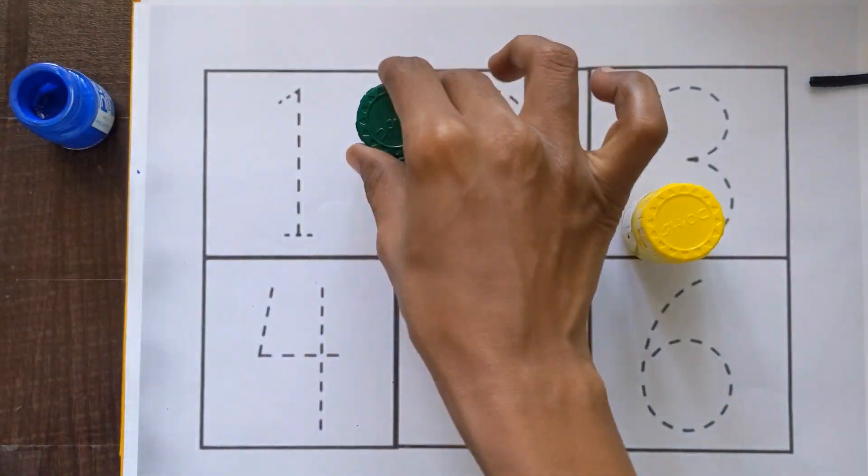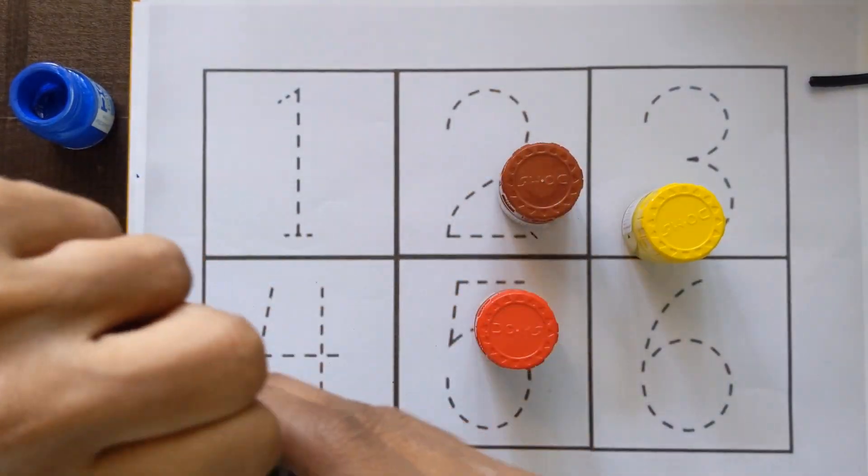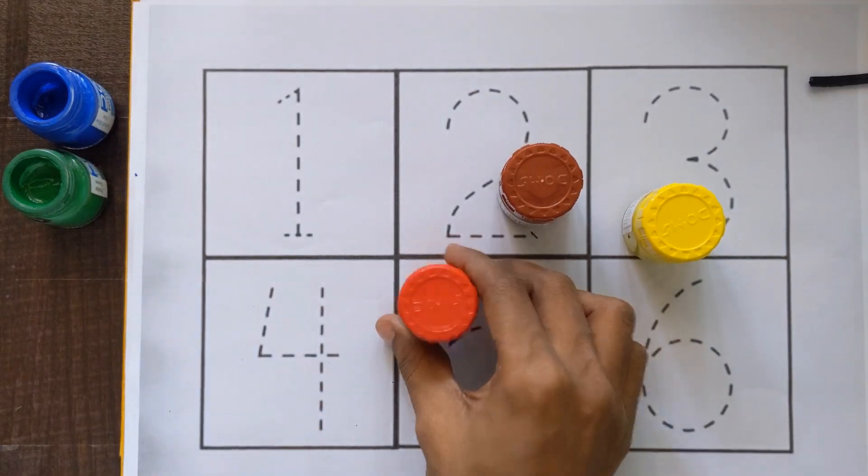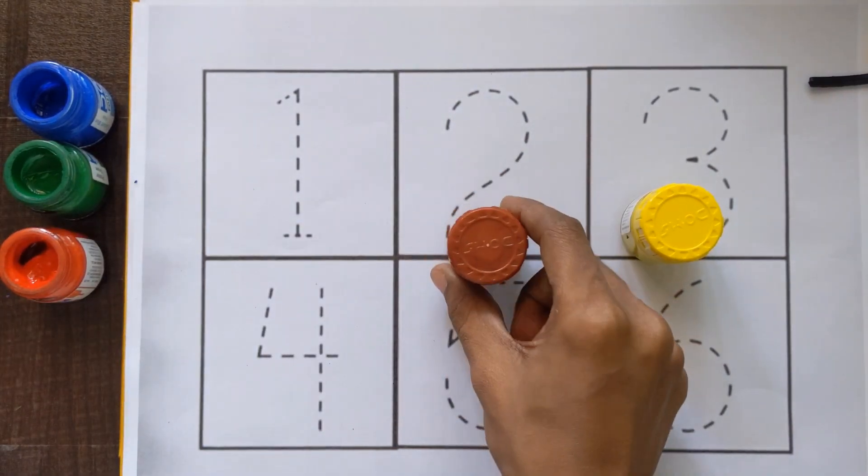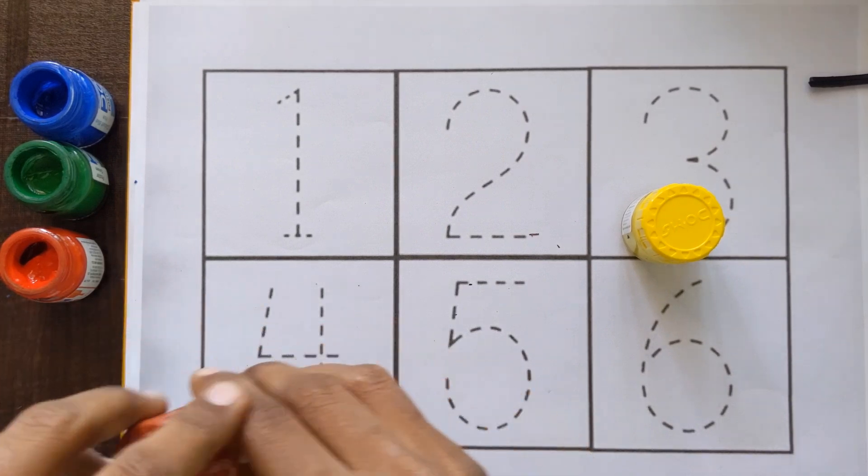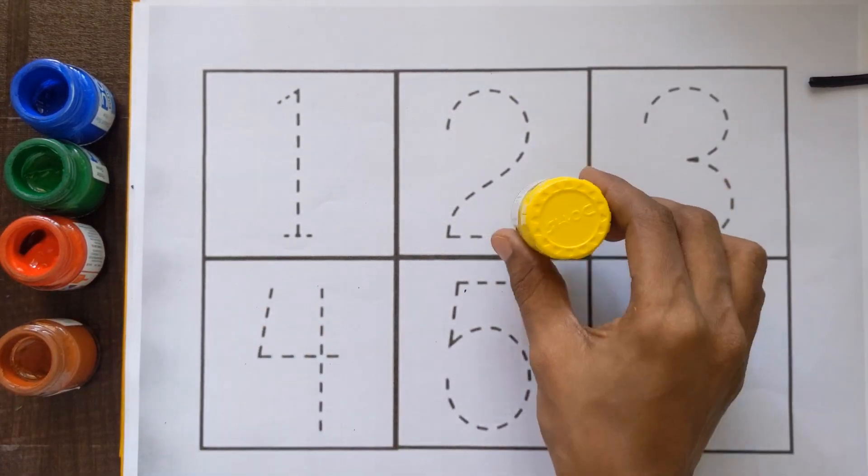Blue color. It's a green color. Red color. Brown color. And yellow color.